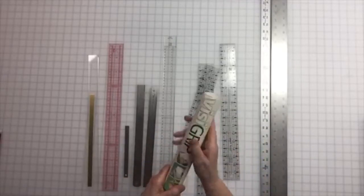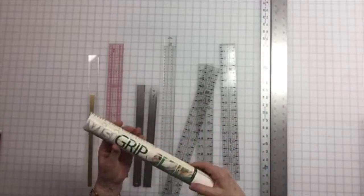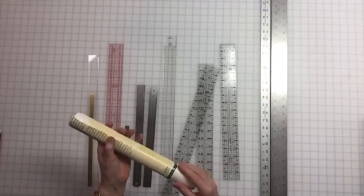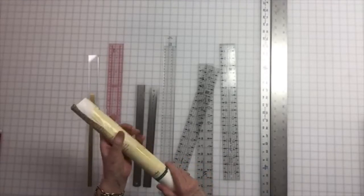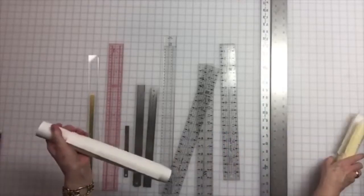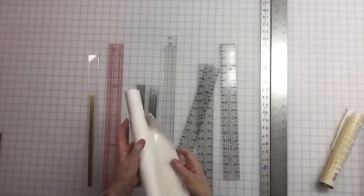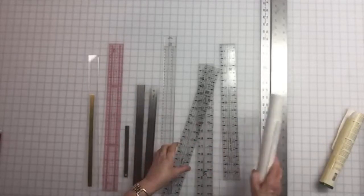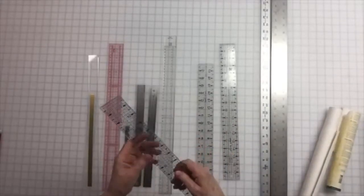One thing you should know with these clear rulers is that I back them. This is a product called Invisigrip. This is like a lifetime supply. I purchased this years ago. It's by OmniGrid. It's a clear plastic liner that you can put on the bottom of your rulers. So just cut off a strip, whatever you need.